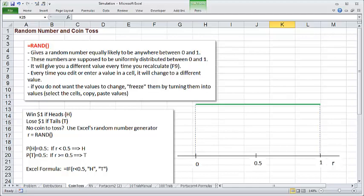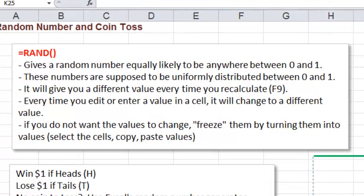Here, we let Excel pick a random number between 0 and 1. In Excel, there is a function called RAND that will give you a number between 0 and 1, and it's a number equally likely to be anywhere between 0 and 1. It's supposed to come from a uniform distribution between 0 and 1. You could try typing the formula in yourself.